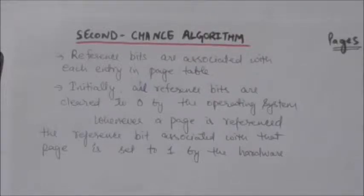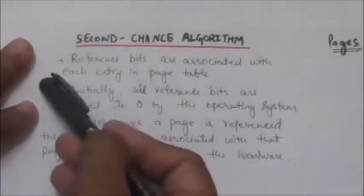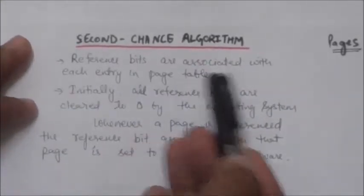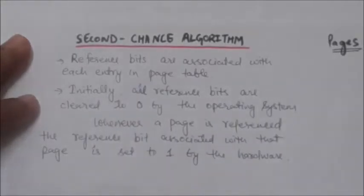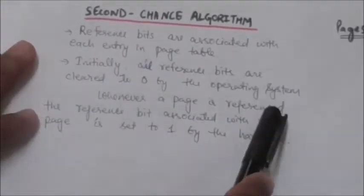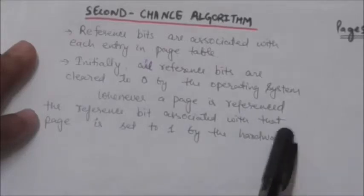Hello friends, welcome back. In this tutorial, we will study the second chance algorithm. In this algorithm, reference bits are associated with each entry in the page table. Initially, all reference bits are cleared to 0 by the operating system. Whenever a page is referenced, the reference bit associated with that page is set to 1 by the hardware.